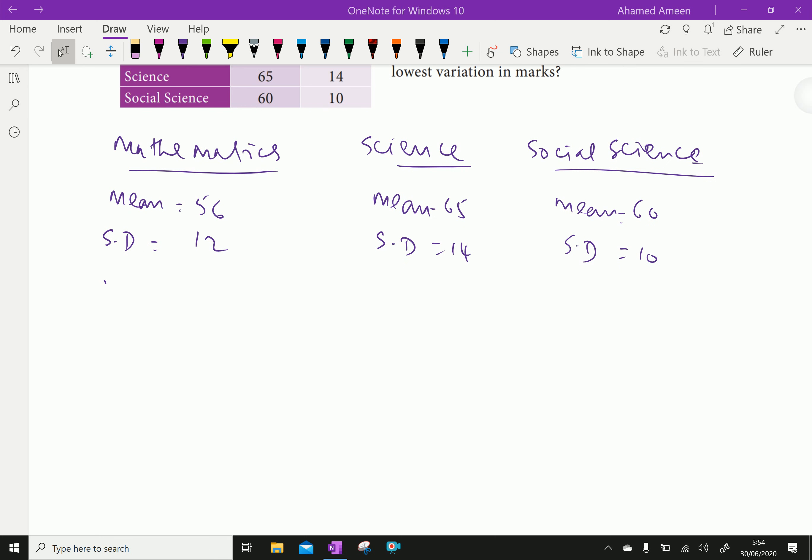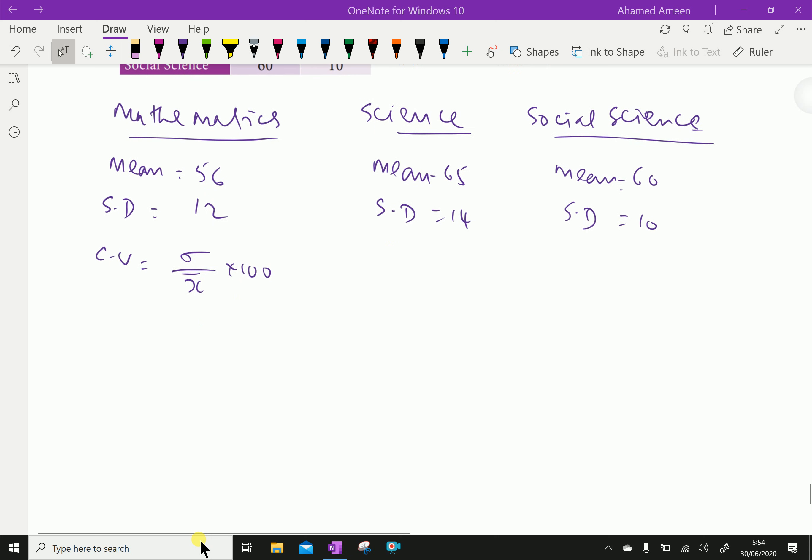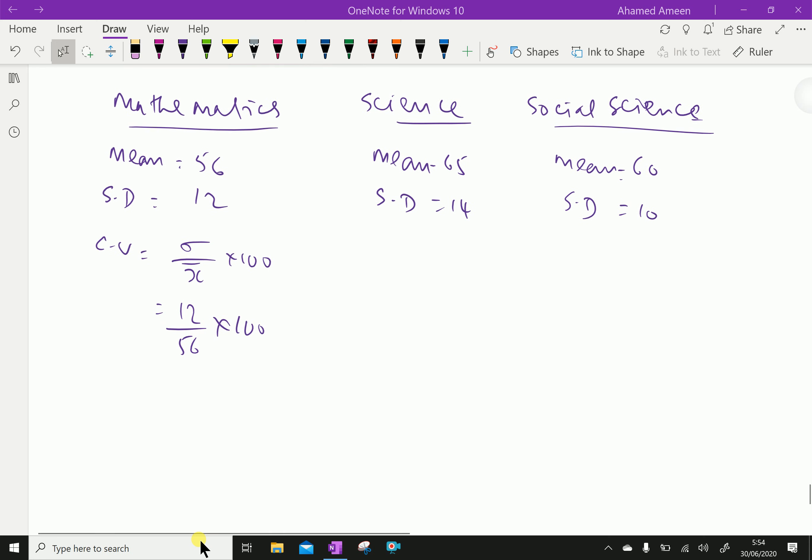Coefficient of variation for math equals sigma over x bar into 100, which is 12 over 56 into 100. For math is 21.4 percent.